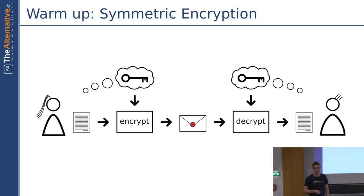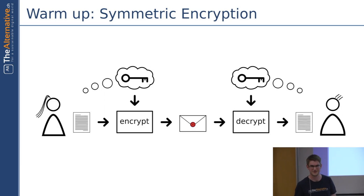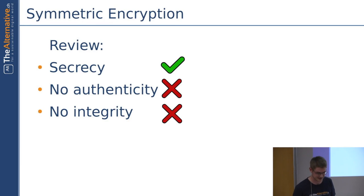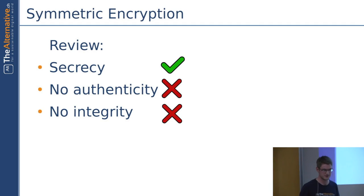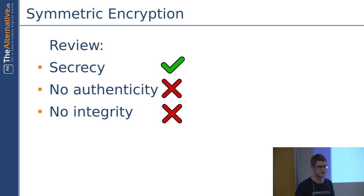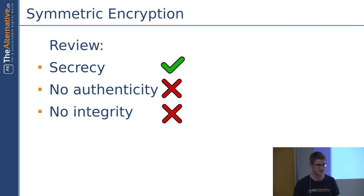This is quite simple so far. Did everybody understand it here? If you do not, just ask questions at any time. So what does symmetric encryption give to us? Of course, we attain secrecy by the principle in the encryption and decryption machine, but we do not gain any authenticity and integrity. So why not?